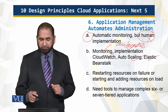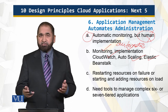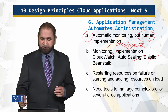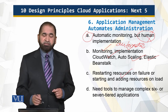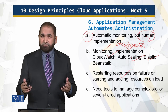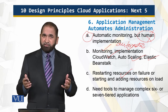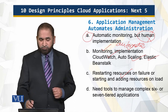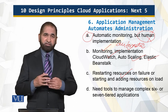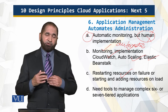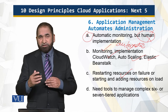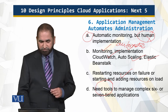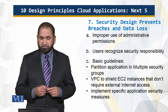Through these tools, implementation is also automatic and efficient. Resources can fail — hard disks can fail, servers can crash — but because of automatic implementation, in case of failure resources can be added, and when there is increased load, more resources are added automatically. This needs to be automatic because the approach is a multi-tiered application, and for a complex six or seven tiered application, automatic tools are required.